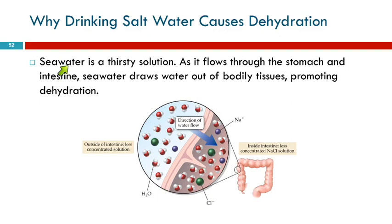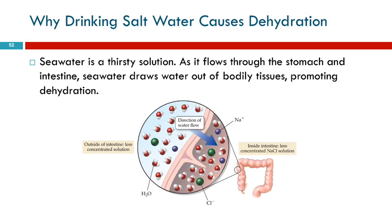We say that salt water or seawater is a thirsty solution — it draws water out of your body. As it flows through your intestines, there is salt in that water, and the concentration of ions in that seawater is higher than the concentration of ions in your body. Osmosis causes the solvent, the water, to move from the less concentrated solution to the more highly concentrated solution.